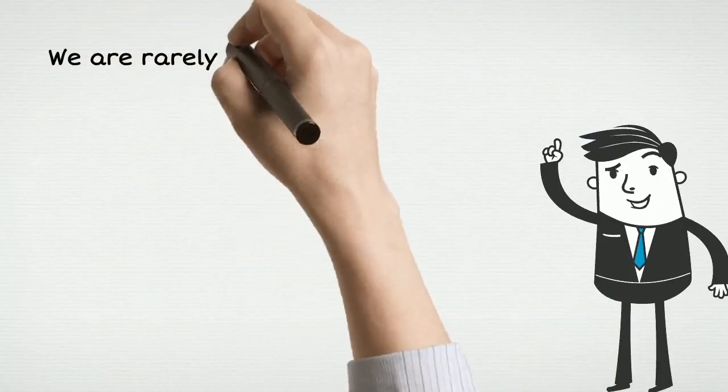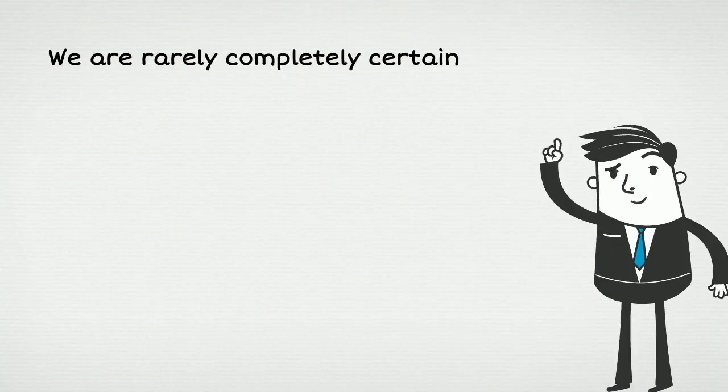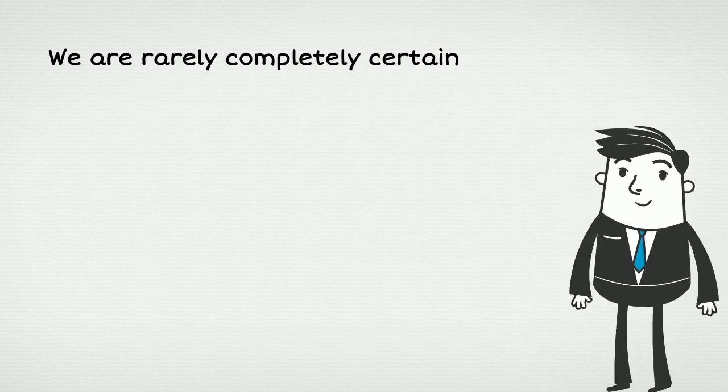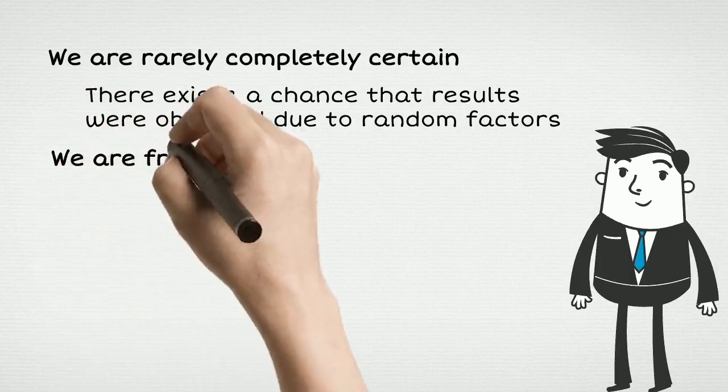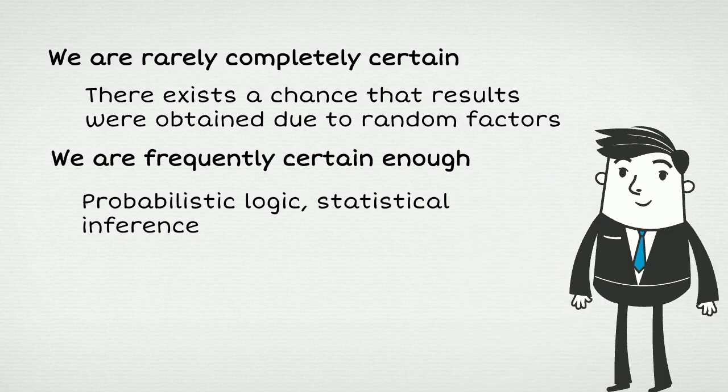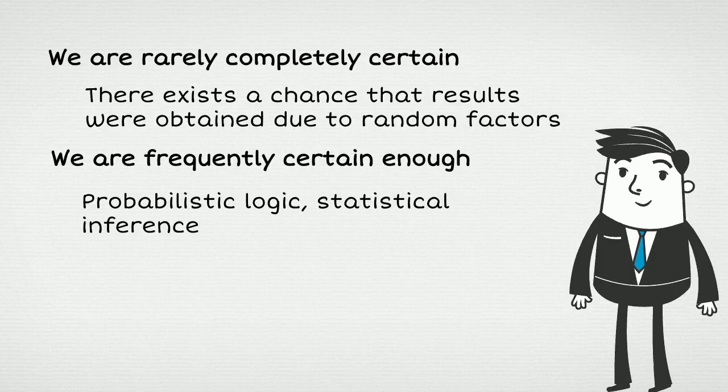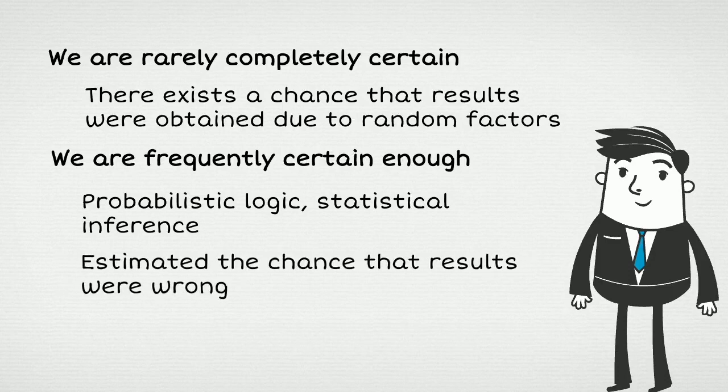So to link it back to the essay question, we are rarely completely certain, but we are frequently certain enough. Results of this experiment are not absolutely certain. There exists a chance that they were obtained due to random factors. However, we are using probabilistic logic and the mechanics of statistical inference. And this gives us the possibility to estimate the chance that our result is wrong. If this chance is less than 5%, then it is good enough for us to accept the results of this study as true.